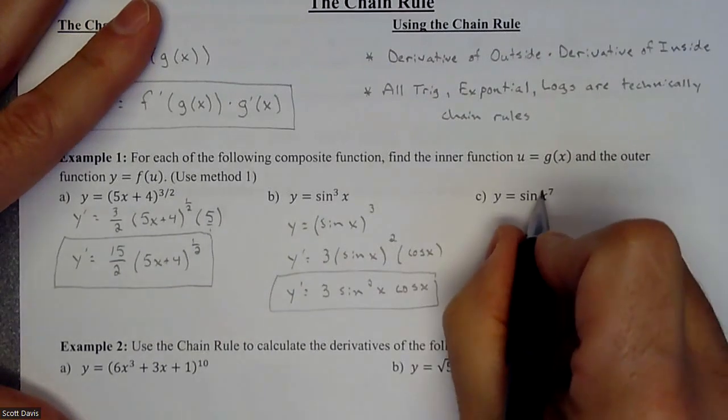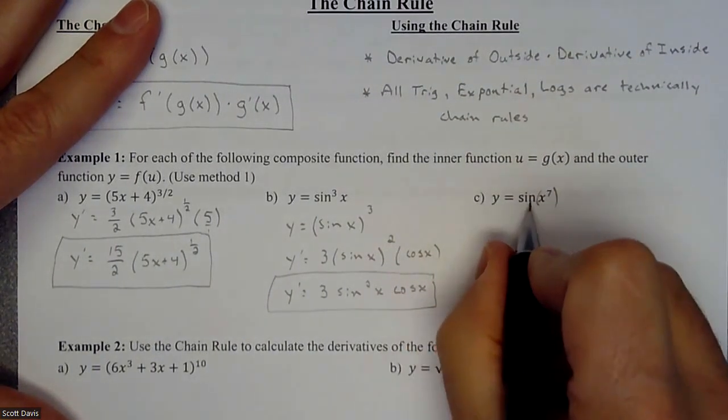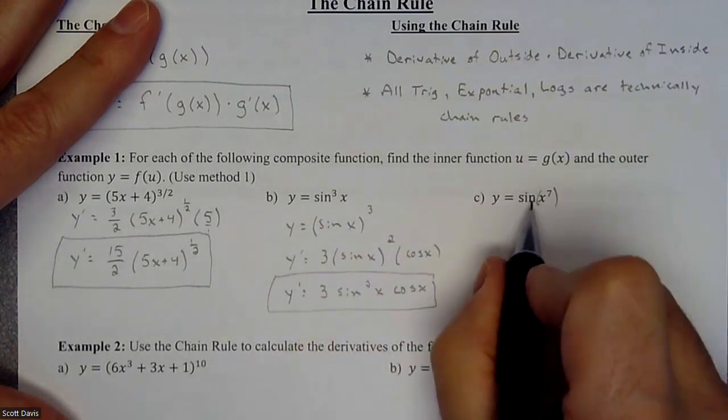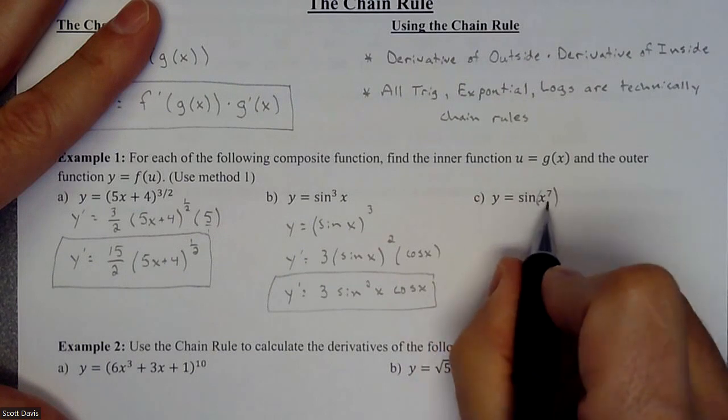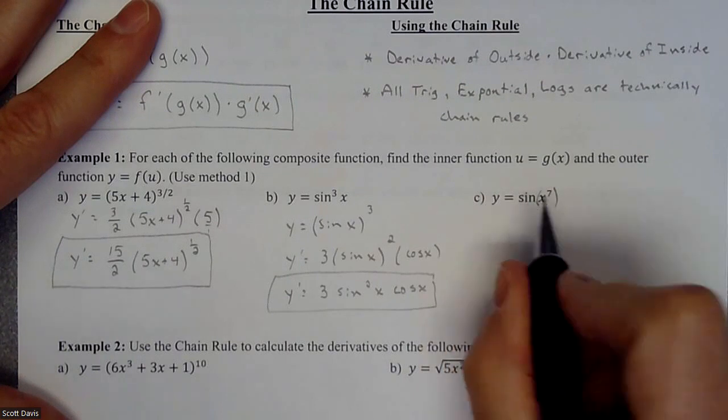All right, and then the last one is we have, this one was, here was our inner function, here's our outer function. This one, sine is your outer function, and x to the seventh is your inner function, inner, outer, inner, outer. So when we're doing this one,